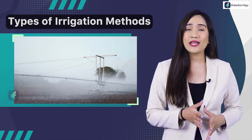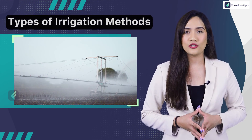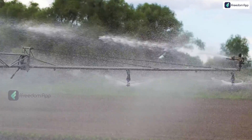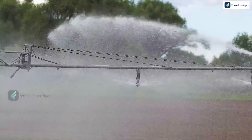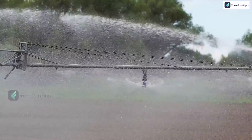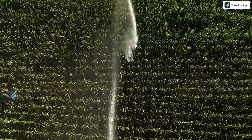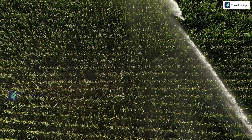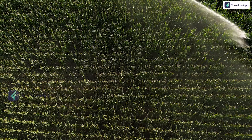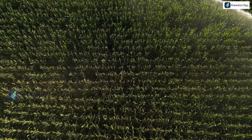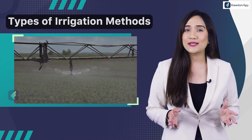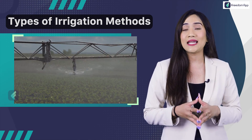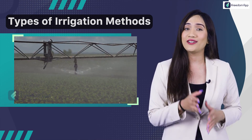This water was used for drinking, washing, and irrigation. The irrigation system is the artificial application of water to the soil or agriculture field. It is like supplementing rainwater with another source of water. It is mostly used in dry areas and during periods of insufficient rainfall. The main idea behind this system is to assist the growth of crops and plants by maintaining the minimum amount of water required.